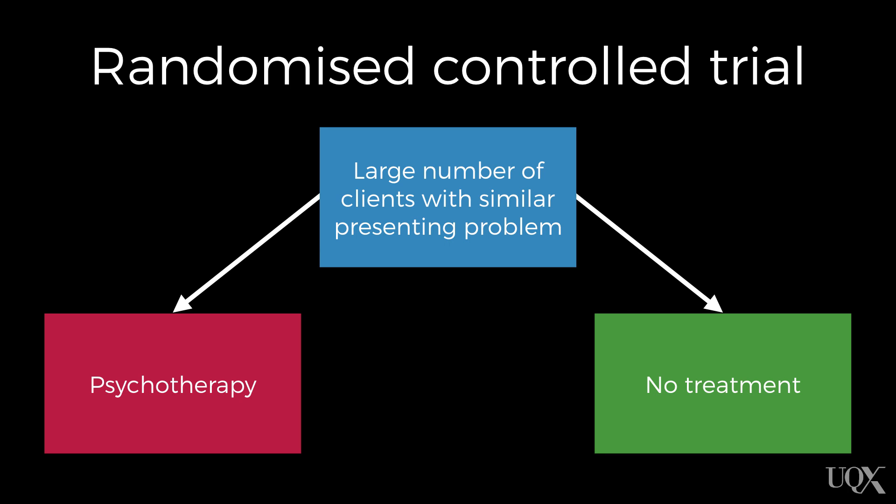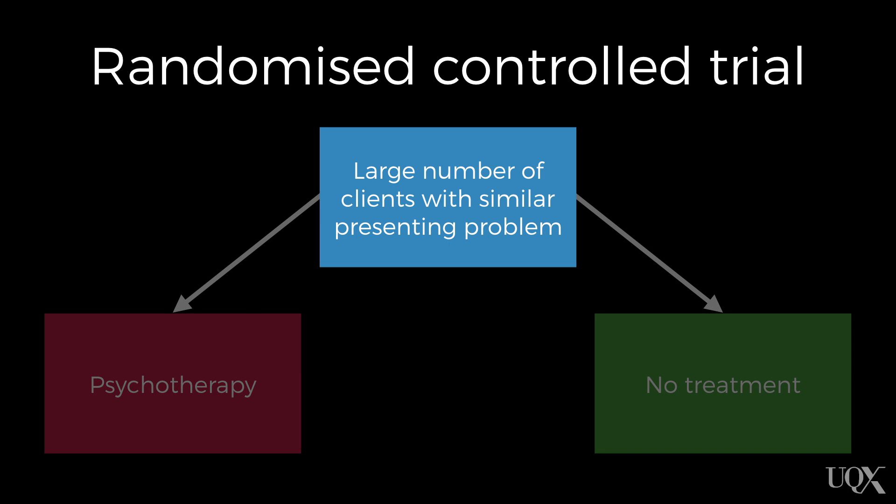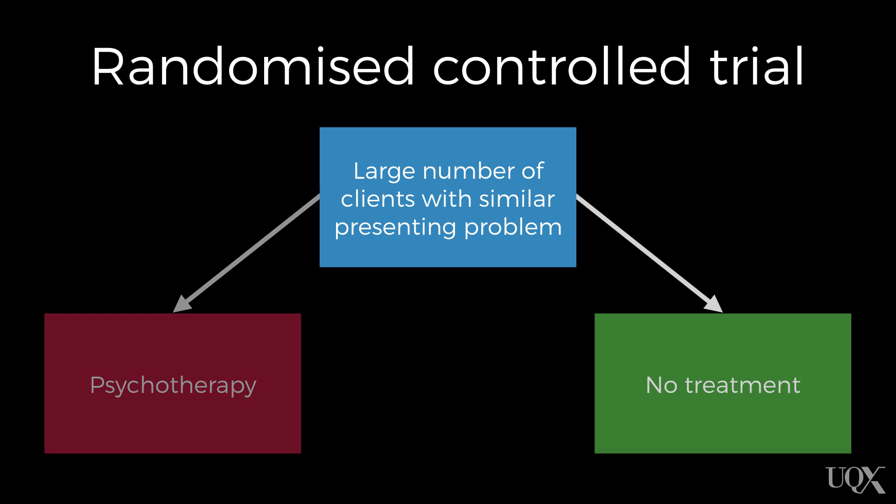Diagrammatically, this is an example of a randomised controlled trial. In this example, participants with a similar presenting problem have been randomly assigned to either the active intervention — psychotherapy — or no treatment, otherwise known as a waitlist control condition. Participants in a waitlist control condition receive no treatment for the duration of the active intervention being evaluated. So if our psychotherapy condition consists of 12 weekly sessions, the waitlist condition would go without treatment for 12 weeks, at which point they would be reassessed to determine whether the passage of time alone has made any difference to their symptoms.